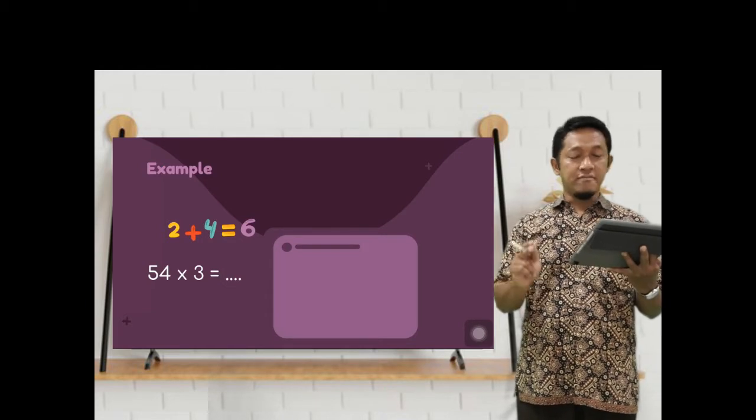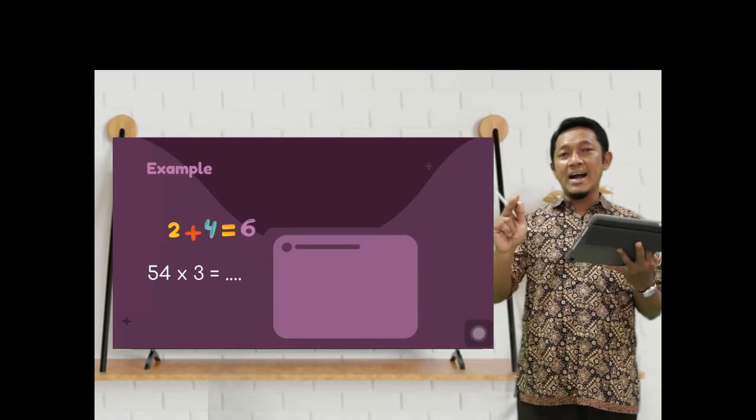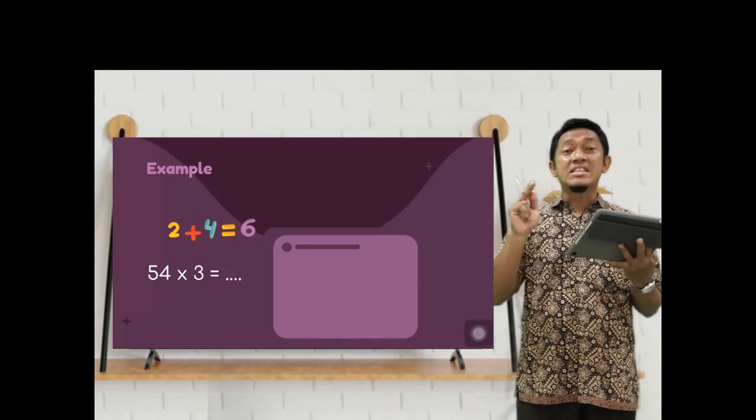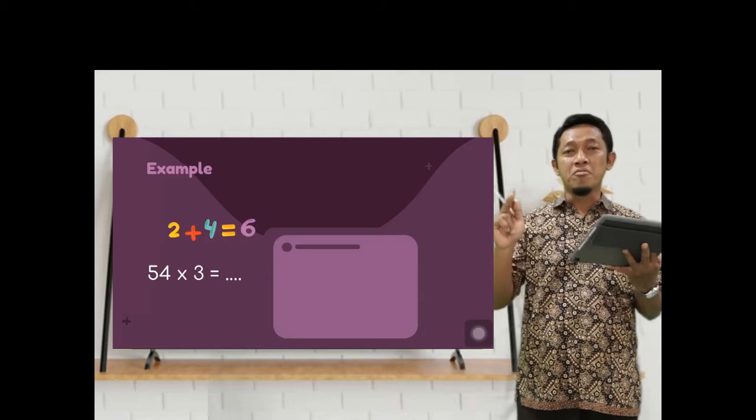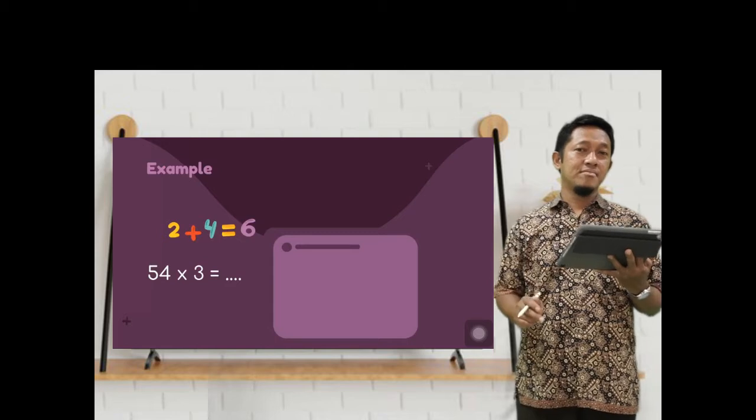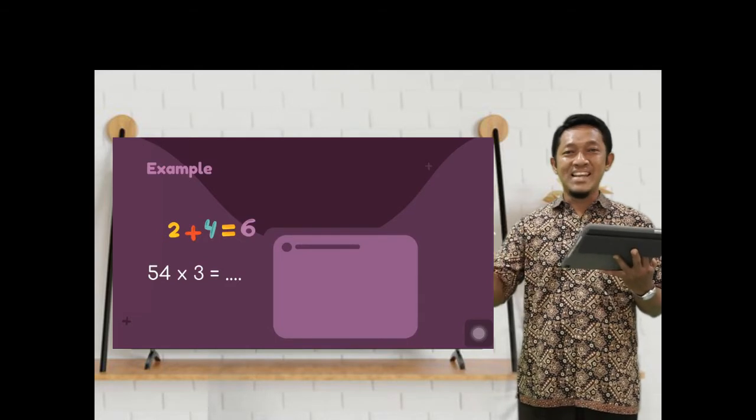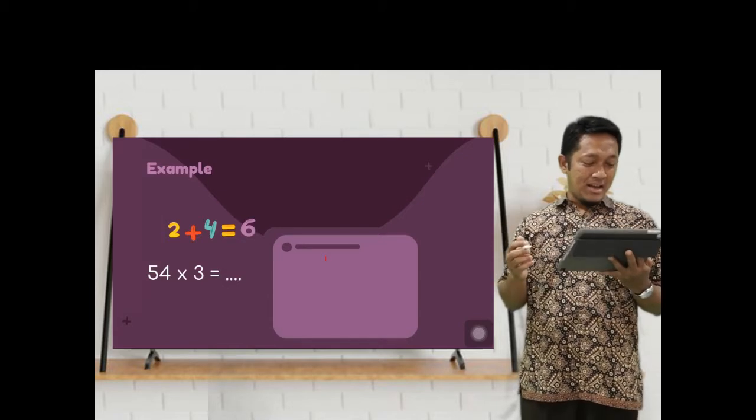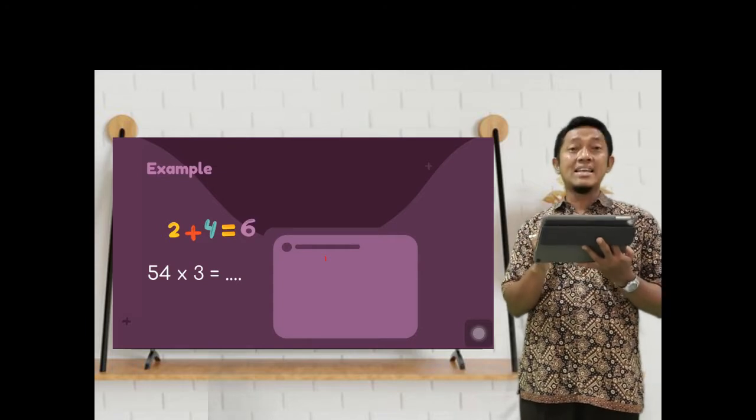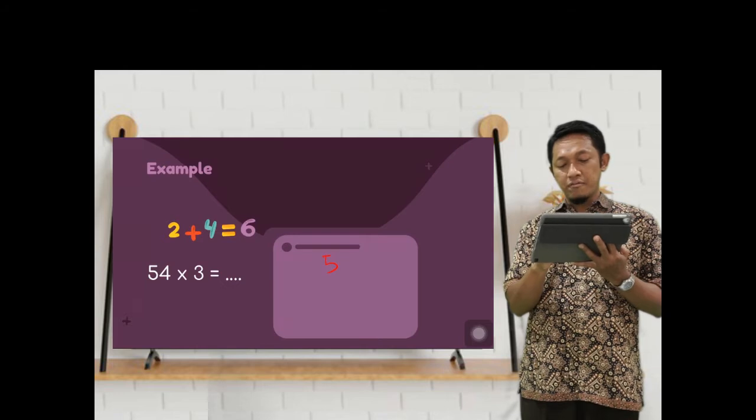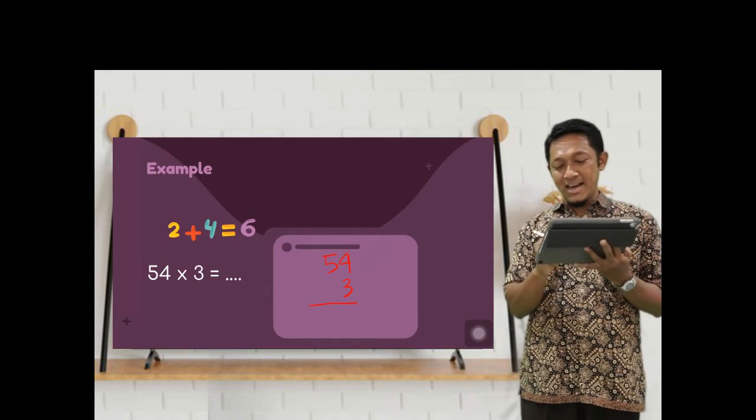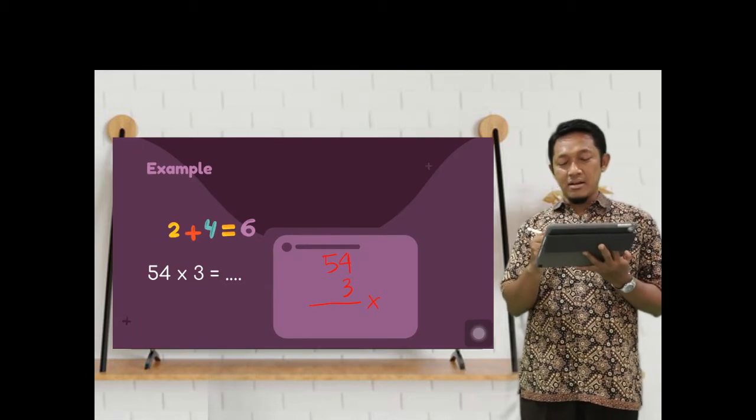Let's start. Let's try. We will multiply double digit times single digit. Two numbers times one number. Tens and ones multiplied by ones. What is the trick? The method is straight, diagonal. Let's try. We will multiply 54 times 3. We write down 54 times 3. And then, straight, diagonal.